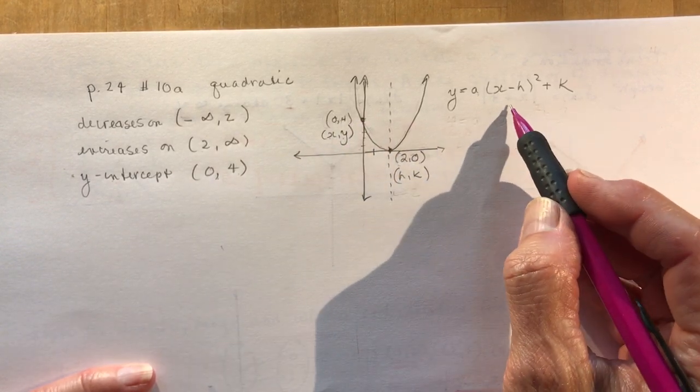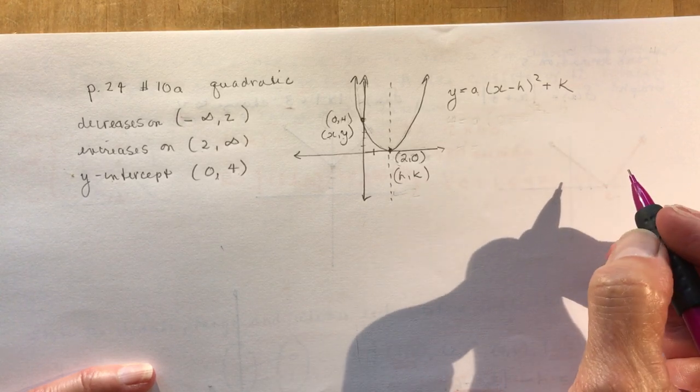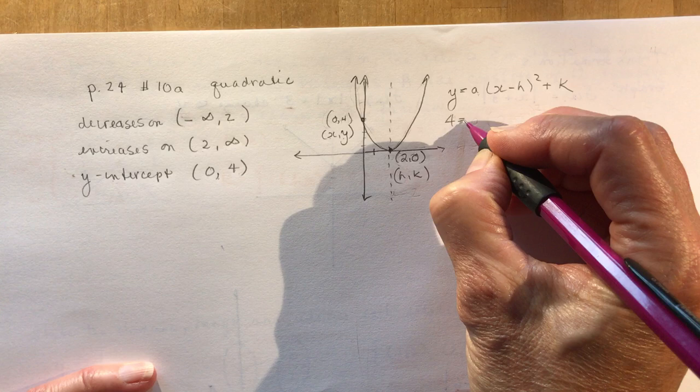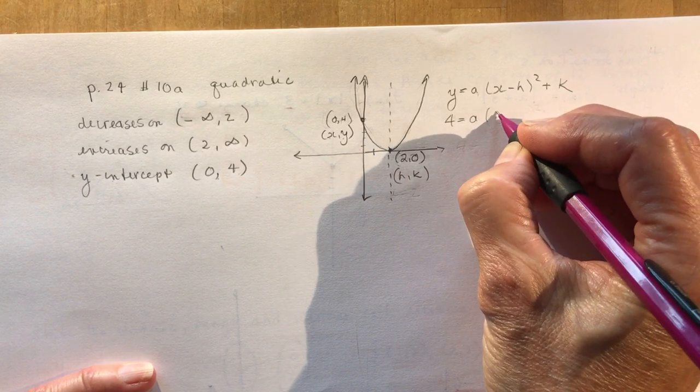And then you would just go back to your equation for a quadratic in vertex form that you learned in grade 10. So I plug in my values to see what the a value would be. Remember, finding the a value?